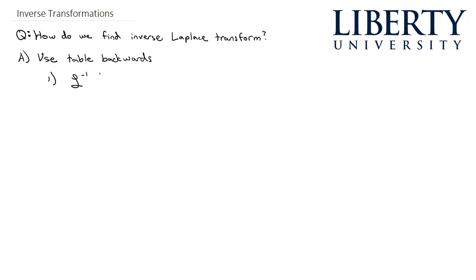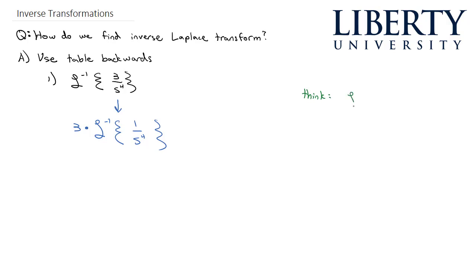I could be asked to find the inverse Laplace transform of 3 over s to the fourth. As I solve this, the first thing I think is I can take the inverse Laplace transform — the 3 can come out as a constant, and 1 over s to the fourth is what I'm going to focus on as I look at my table. And if I look at my table, I see that the Laplace transform of t to the n is equal to n factorial over s to the n plus 1, which means the Laplace transform of t cubed is 3 factorial over s to the fourth.